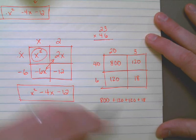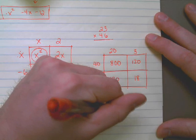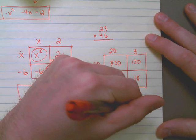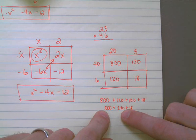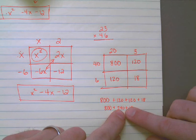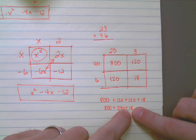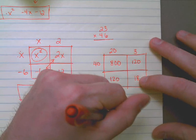So that would be 800 plus 240 plus 18. 800 plus 200 is 1,000, so that's 1,040. 1,040 plus 18 is 1,058.